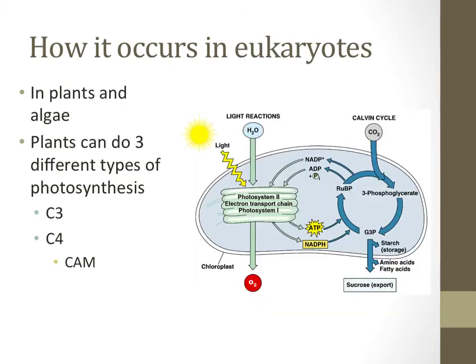In eukaryotes, organisms that have a nucleus such as plants and algae, photosynthesis takes place in the chloroplast, exhibited in this picture. The process can occur very differently, using different pigments or different biochemical pathways. There are three distinct ways that plants can do photosynthesis, which will be described on the next three slides. These are called C3, C4, and CAM photosynthesis.